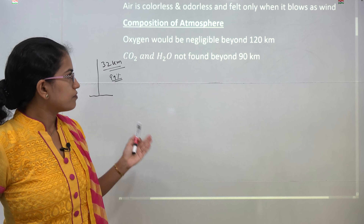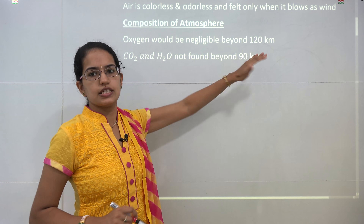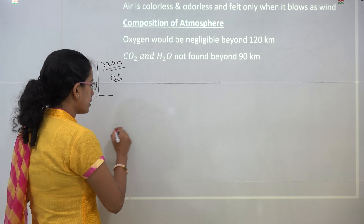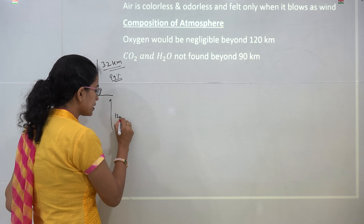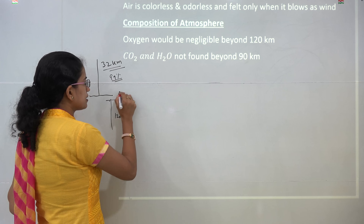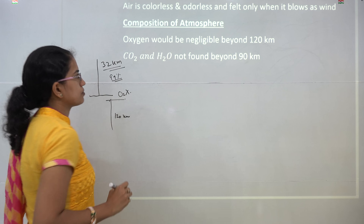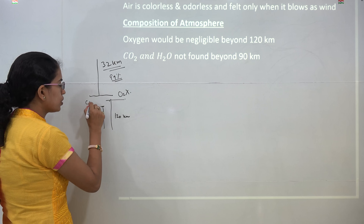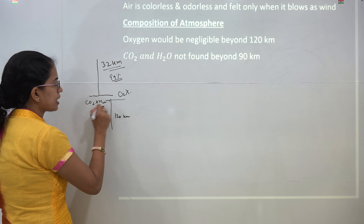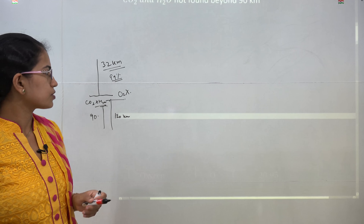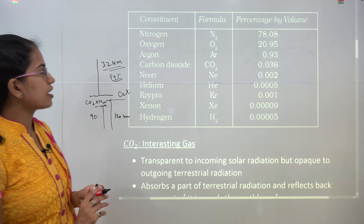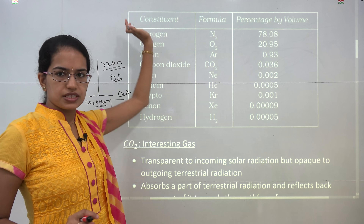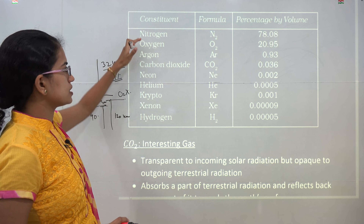When we talk about composition, oxygen is not present beyond 120 kilometers. So if I move 120 kilometers up from the ground, beyond that there would be no oxygen present. And beyond 90 kilometers, there would be no carbon dioxide and water vapor present. By composition, the maximum volume of gas present in the atmosphere is nitrogen, followed by oxygen.